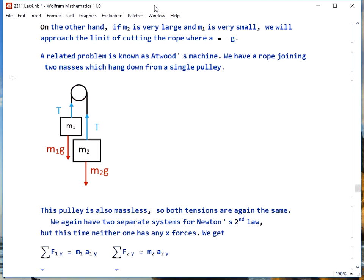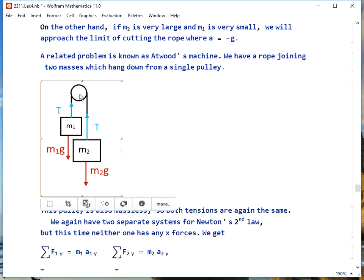A related problem is Atwood's machine. In this example, we have two masses hanging from a rope, which is of course massless, on a pulley that's also massless and frictionless.